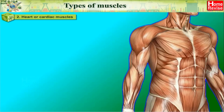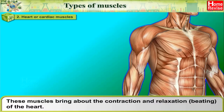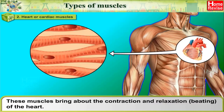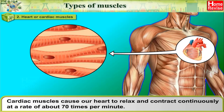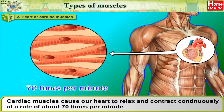2. Heart or Cardiac Muscles — these muscles bring about the contraction and relaxation, that is the beating of the heart. Their movement is involuntary. Cardiac muscles cause our heart to relax and contract continuously at a rate of about 70 times per minute.